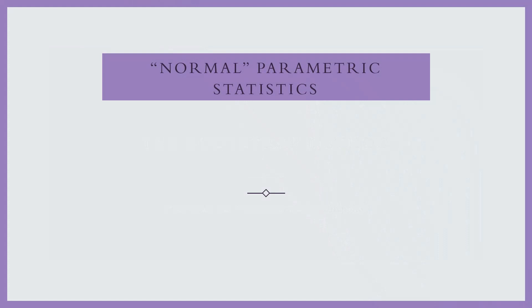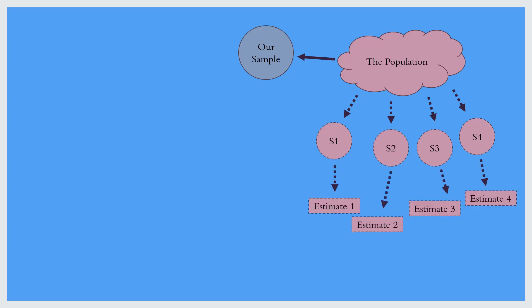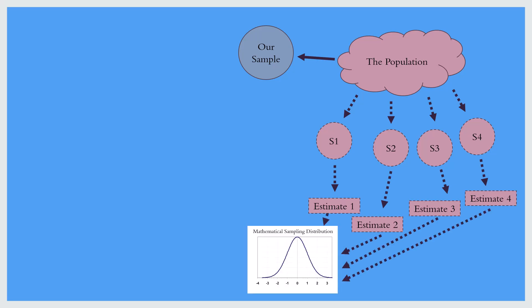Let's first, however, review what we normally do in normal parametric statistics. I have normal in quotes here because much of normal parametric statistics is based on the normal distribution. We begin with a population and from that population we draw a random sample. Now what we do as a thought experiment is imagine what would happen if we had drawn multiple samples from the population. We don't actually draw these samples — that's why I have dotted lines here to represent that this is more in our thinking and in our mathematical derivations, not something that we actually do.